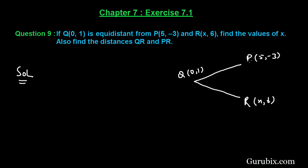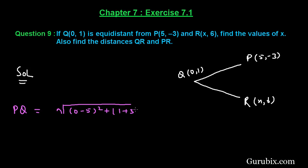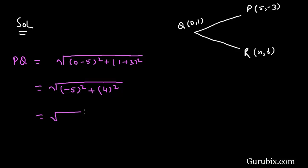We are given that Q is equidistant from points P and R. Therefore, first we shall find the distance between points P and Q. Using the distance formula, PQ = √((0 - 5)² + (1 - (-3))²) = √((-5)² + (4)²) = √(25 + 16) = √41.